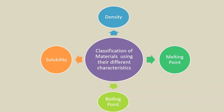Matter can be classified according to its physical and chemical properties. Today we are going to learn about the classification of materials using their physical properties. Every material has its own physical properties or characteristics. We can classify various materials based on their characteristics in terms of solubility, density, melting point, and boiling point.